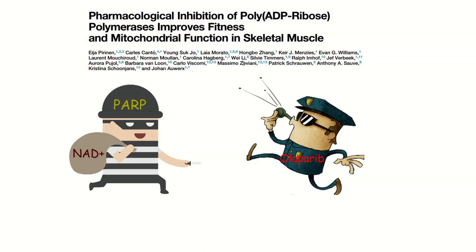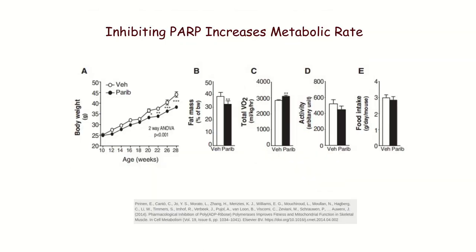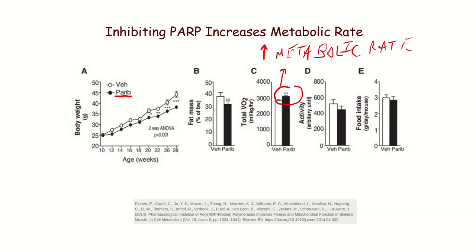They put mice on a high fat diet designed to fatten them up, then gave them this PARP inhibitor. You can see the mice weigh less, they have less fat mass, and they have a higher metabolic rate. VO2 is oxygen consumption — the more oxygen they consume, the higher the metabolic rate. You see the direct effect of inhibiting the NAD+ thief: increased metabolic rate.